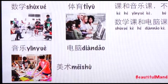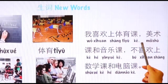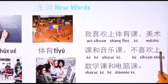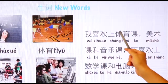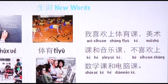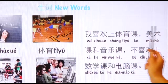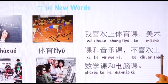好,现在让我们看 examples. 我喜欢上体育课、美术课和音乐课。不喜欢上数学课和电脑课。 我喜欢上 means 'I like to have.' 上 here is a verb meaning 'to take' or 'to have.' I like to have physical training class, art class, and music class. 不喜欢 — don't like math class and computer class.